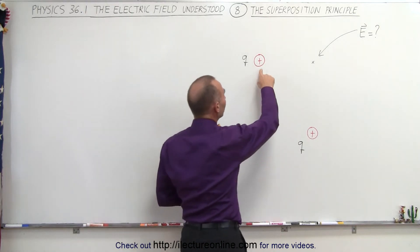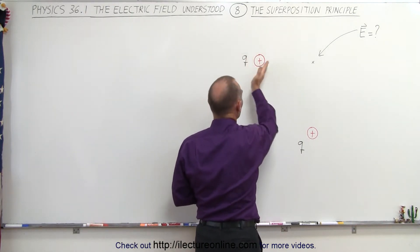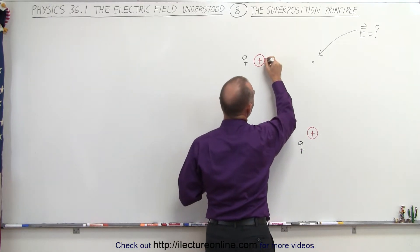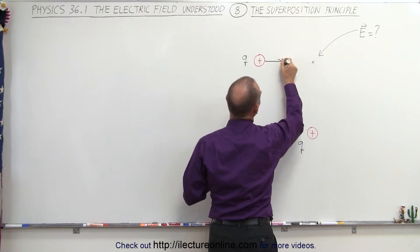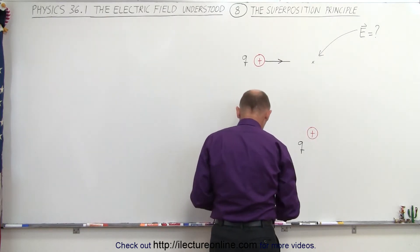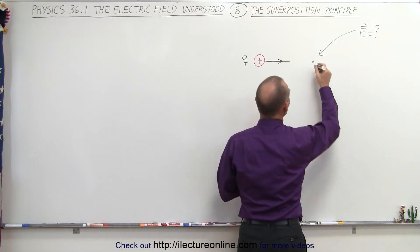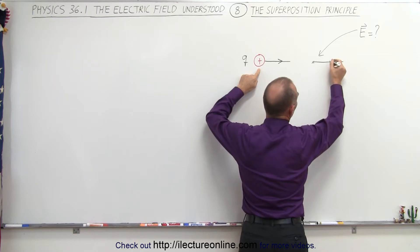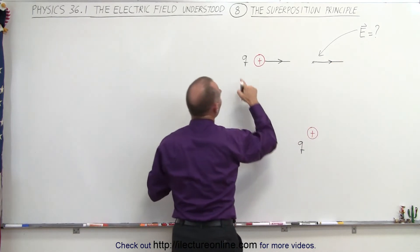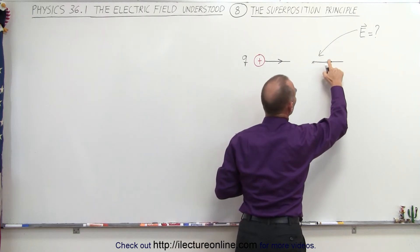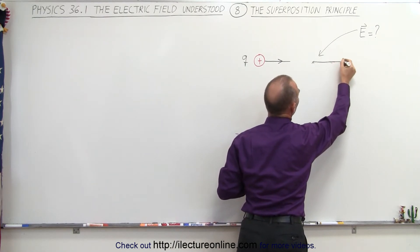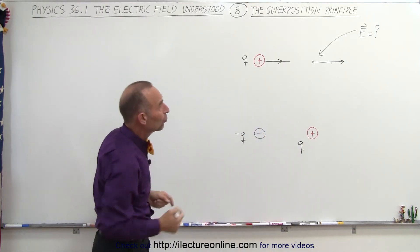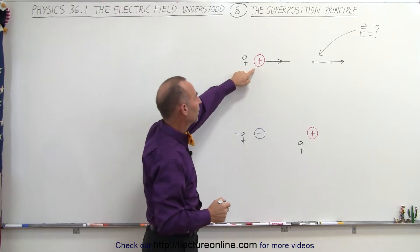The electric field created by this charge right here emanates in all directions, but relative to this point right here, we can see that there's going to be an electric field in this direction, like so. So at this location, we can indicate that there's an electric field from this source in this direction. We'll draw a vector like that — the vector arrow indicates that the length of the vector represents the magnitude of the electric field caused by this charge right here.